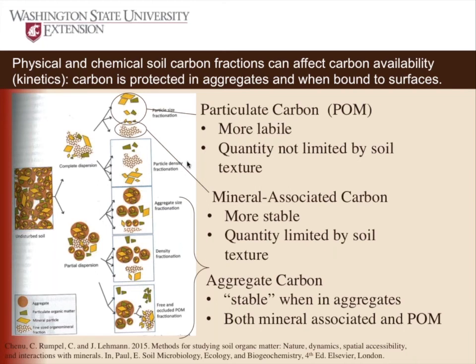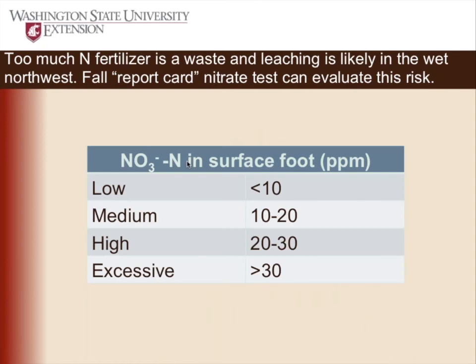The guess, observe, and test approach is one we really encourage. We get a lot of rain in the winter in the Pacific Northwest, so any nitrate left in the soil at the end — if you over-apply nitrogen — is going to be leached out. We encourage people to do soil testing in the fall to really get this number and evaluate how well they did. You don't want to be in the low category, but you certainly don't want to be in the excessive or very excessive category, which we sometimes see.